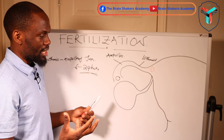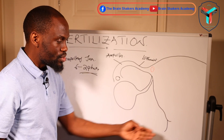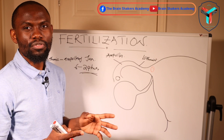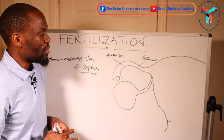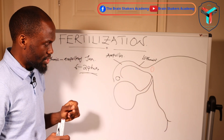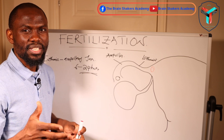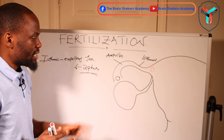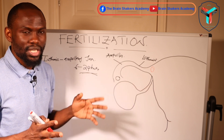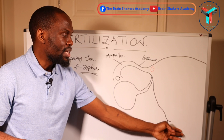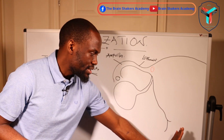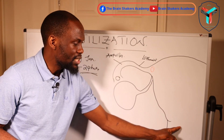There has to be a sexual act — intercourse — that deposits spermatozoa in the vagina. There are also ways to facilitate fertilization outside of the uterus, which I'll cover in a separate video on infertility. For today's topic, we'll use sexual intercourse as the primary mode of depositing spermatozoa.